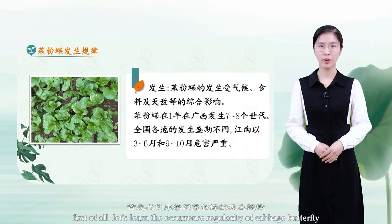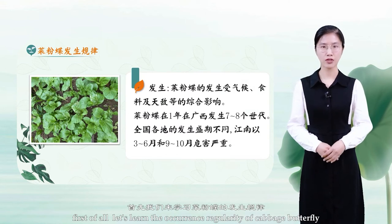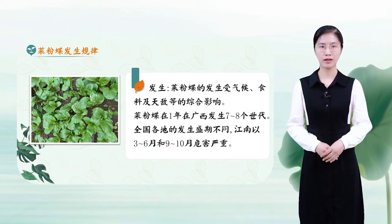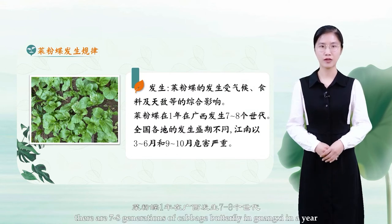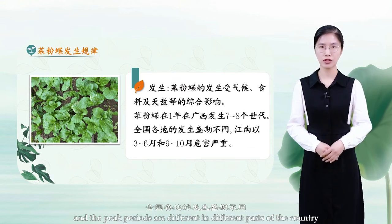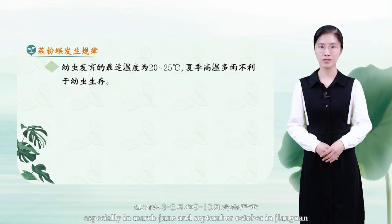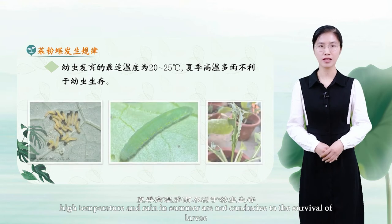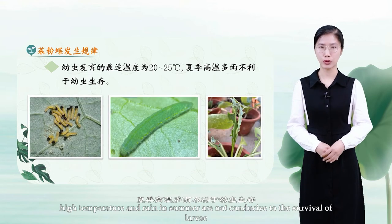First, let's learn the occurrence regularity of the cabbage butterfly. There are seven to eight generations of cabbage butterfly in Guangxi per year. Peak periods differ across the country, especially March to June and September to October in Jiangnan. High temperature and rain in summer are not conducive to the survival of larvae.